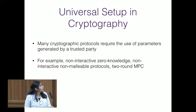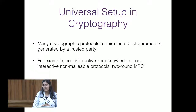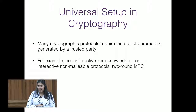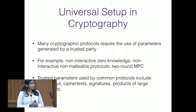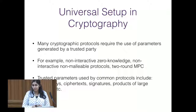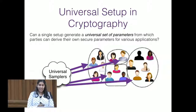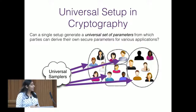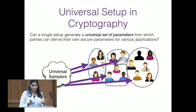There are many cryptographic protocols that require the use of parameters generated by a trusted third party. Examples include non-interactive ZK, low-round MPC, non-interactive non-malleable protocols, and others. They use various kinds of trusted parameters such as public keys, ciphertexts, and signatures, all generated securely without revealing the randomness used to sample them. The question we ask is: can a single setup be used to generate a universal set of parameters that parties can use to derive their own secure parameters for various applications later?